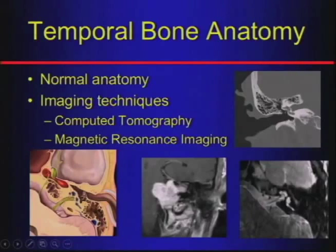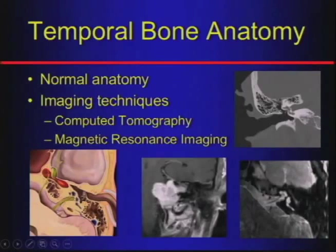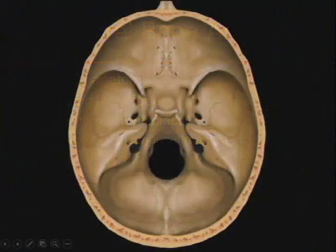First I'm going to go over the normal anatomy of the temporal bone and the skull base and their relationship to each other. Then we'll talk a little bit about imaging techniques, mostly CT and MR, that we use for the temporal bone.